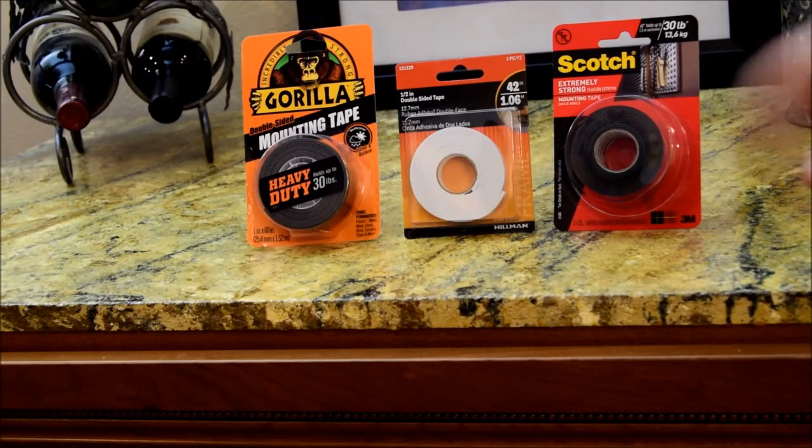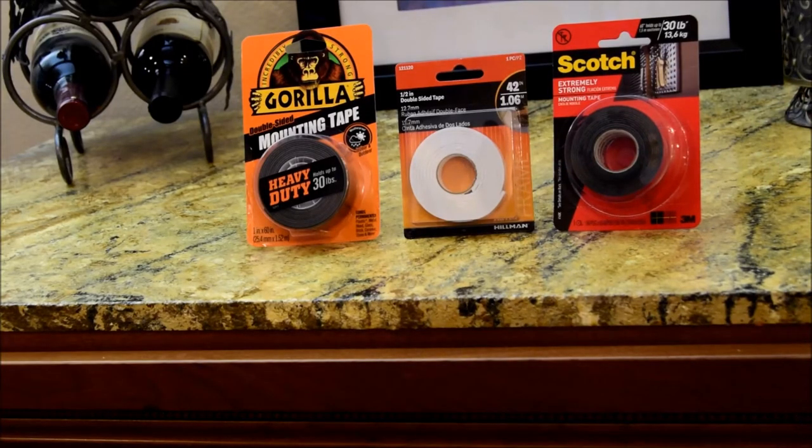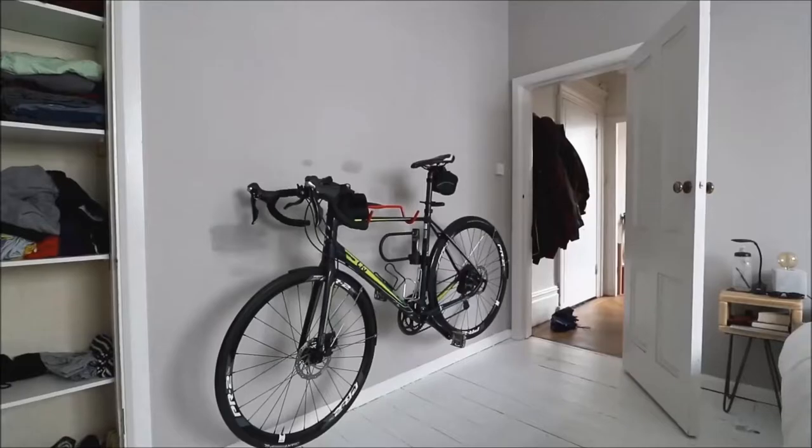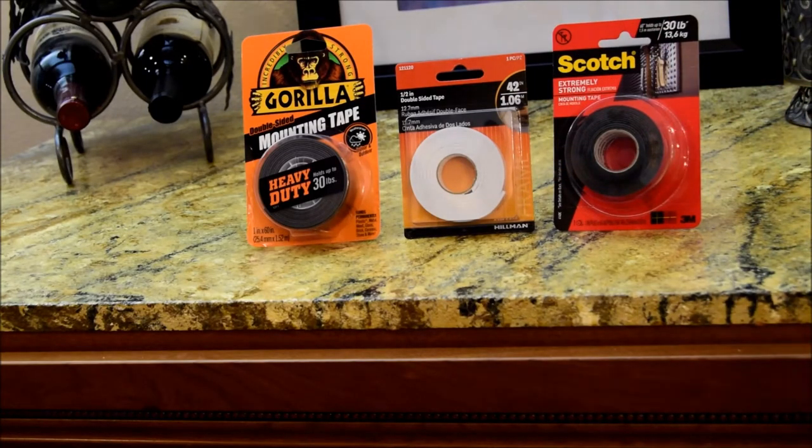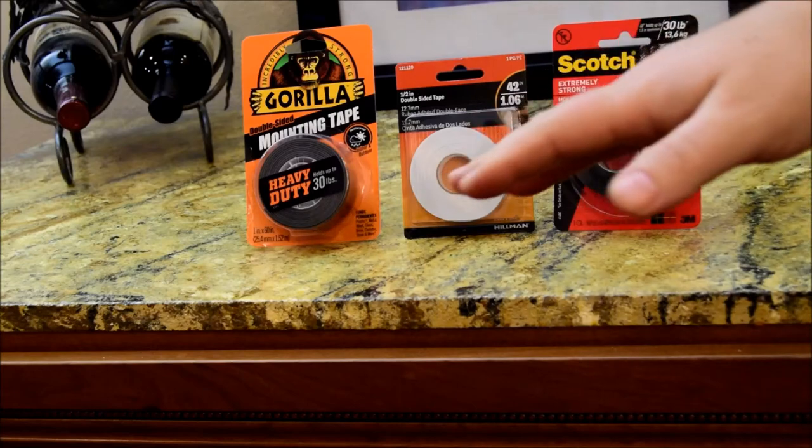I checked many of my local stores and only found two products that advertised a 30-pound hanging capacity: the Scotch brand and the Gorilla brand. I also picked up this inexpensive tape as a baseline comparison.